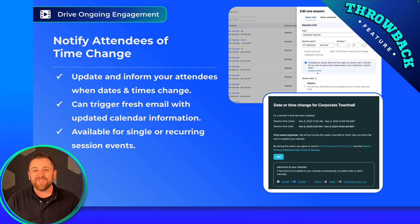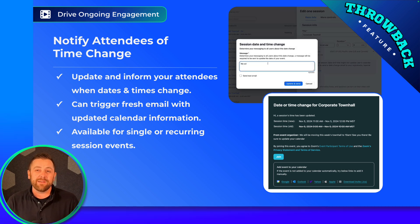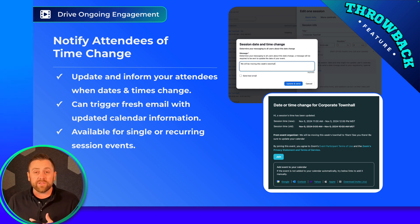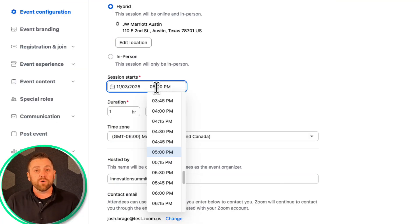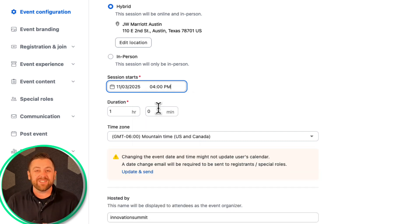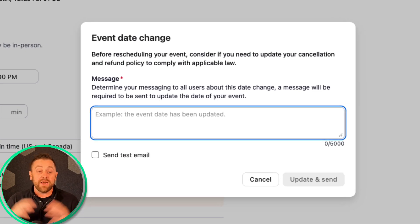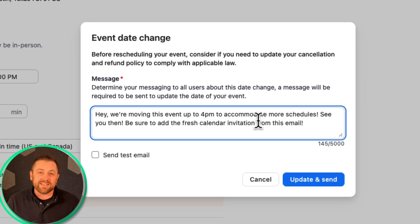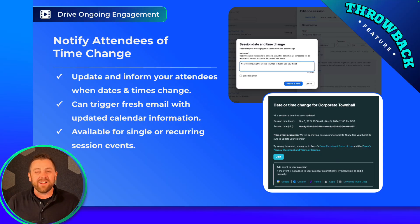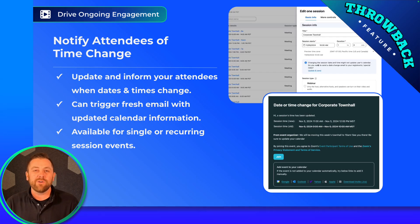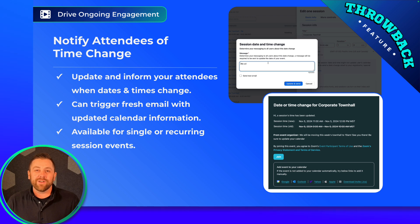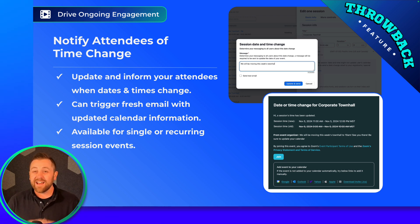The last feature for this month — another throwback — is the ability to notify attendees when your session date and time changes. This comes up a lot: how do we keep everybody up to date? As you change the time, we give you an option — and I strongly encourage you to take advantage of it — to send a fresh email about the date and time to your attendees. You can put a little message in there and off goes a fresh email with a fresh calendar module, always keeping people up to date with the latest times and dates of your event.